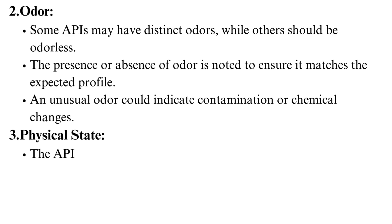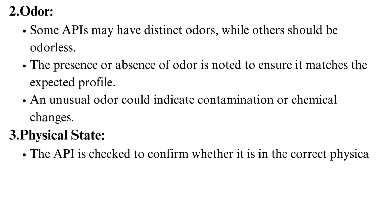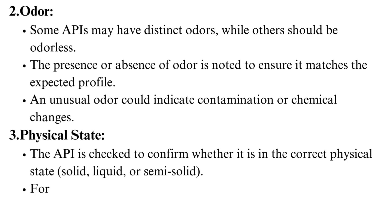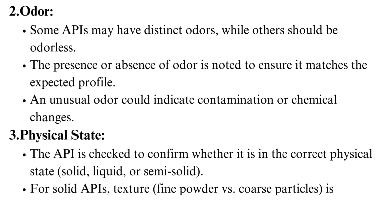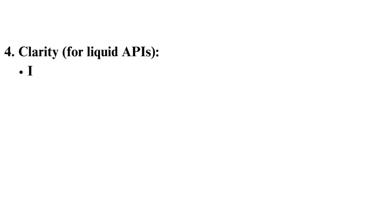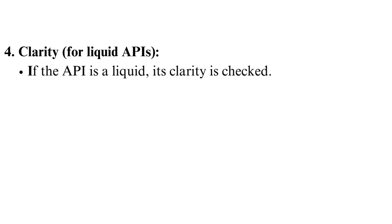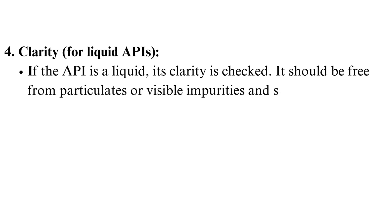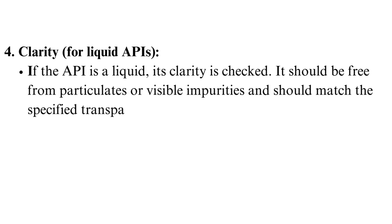The API is checked to confirm whether it is in the correct physical state: solid, liquid, or semi-solid. For solid APIs, texture — fine powder versus coarse particles — is also noted. For liquid APIs, clarity is checked; it should be free from particulates or visible impurities and should match the specified transparency or opacity.